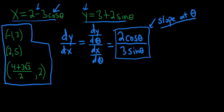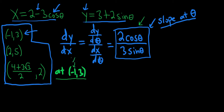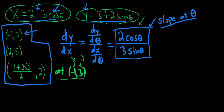Now we have to find the equation of the tangent line at the point (-1, 3). We have the point; we just need the slope. We don't have the actual slope yet — we have the formula — so we need to find θ. The trick is to plug your x and y values back into the parametric equations to find θ. So x = -1 gives us -1 = 2 - 3cosθ, and y = 3 gives us 3 = 3 + 2sinθ.